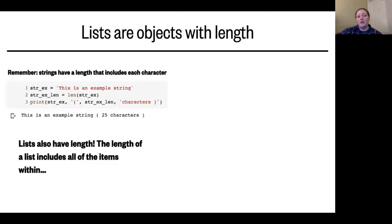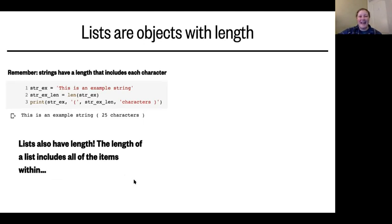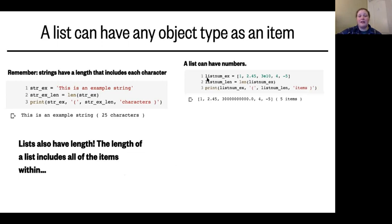If you recall when we were talking about strings in the last set of videos, we talked about how they have a length, and that length has to do with how many characters, including spaces, are in that string. Lists are very similar in that they also have a length and a number of objects in them. However, those objects aren't just characters — they can be anything, including numbers. You denote a list using square brackets, put items inside separated by commas. You can have integers, floats, and even negative numbers, all existing happily together in one list.